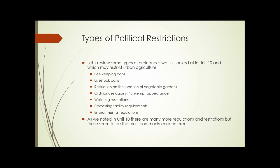Let's review some of the types of ordinances from Unit 10 that may be restrictive to the practice of urban agriculture: things such as beekeeping bans or livestock bans, restrictions on the locations of vegetable gardens, ordinances against unkempt appearance, watering restrictions, processing facility requirements, and environmental regulations. There are many more regulations and restrictions to deal with, but these seem to be the most commonly encountered.